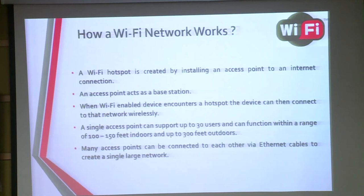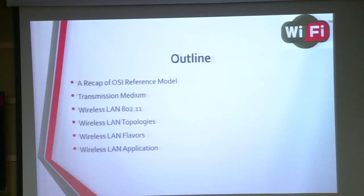The working mechanism behind Wi-Fi is that we need an access point, a backbone, and a device that can be connected to the access point. Today our topic is wireless LAN, and the outline covers: a recap of the OSI reference model, transmission medium, wireless LAN, wireless LAN topologies, wireless LAN flavors, and wireless LAN applications.